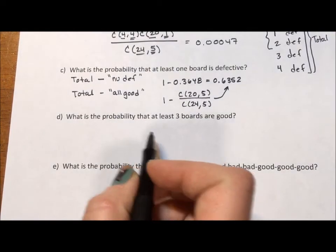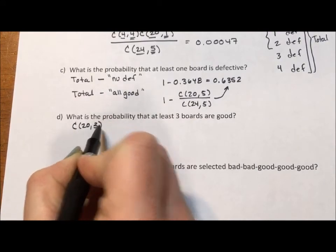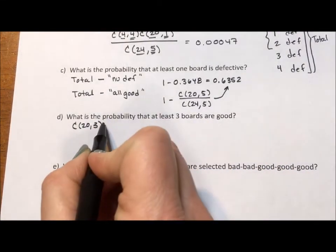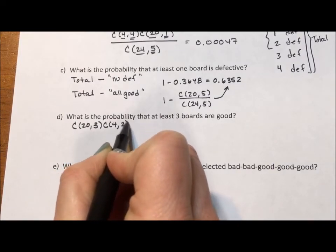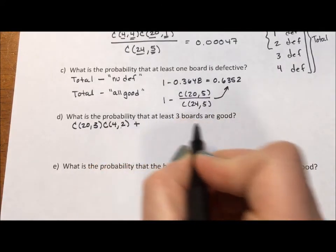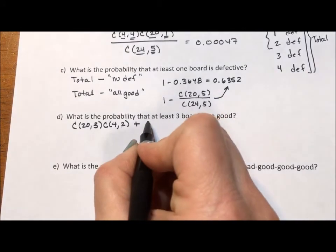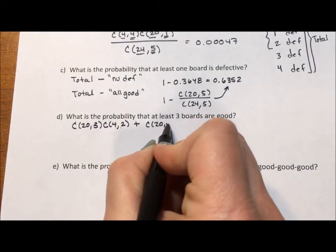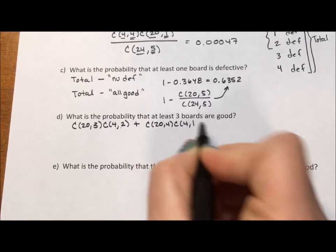Let's say that we want to make sure that we have at least 3 boards that are good. So if we have 3 boards that are good, that's the combination of the 20 good boards taken 3 at a time. But I need a set of 5. So I need to multiply the combination of the 4 defective boards taken 2 at a time because 3 plus 2 is 5. I have to add to this another category, the category that 4 boards are good. That's the combination of the 20 boards taken 4 at a time times the combination of the 4 defective boards taken 1 at a time.